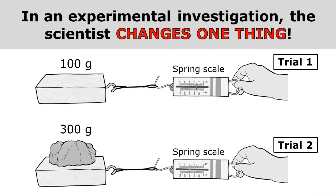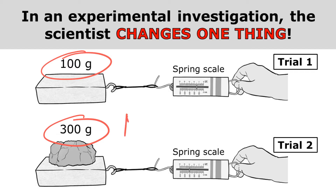In this investigation, we can easily see that the scientist has changed the mass that is being pulled, and so that would be the independent variable — the one thing that the scientist changed.